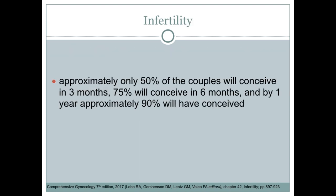Now, why do we wait for one year before we evaluate these couples for infertility? It is because approximately only 50% of couples will conceive in about 3 months, 75% will conceive in 6 months, and by one year, approximately 90% of these couples will have conceived.